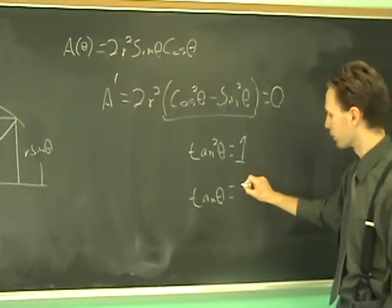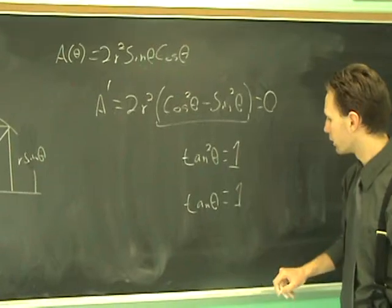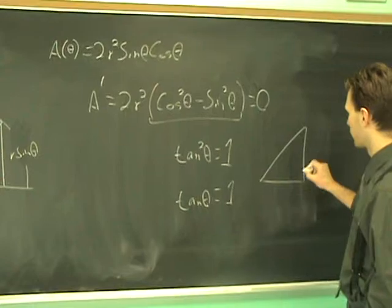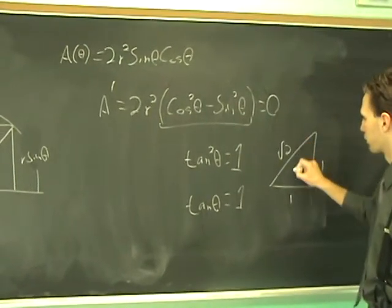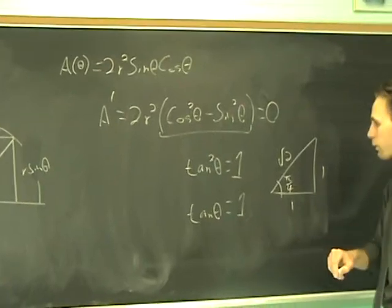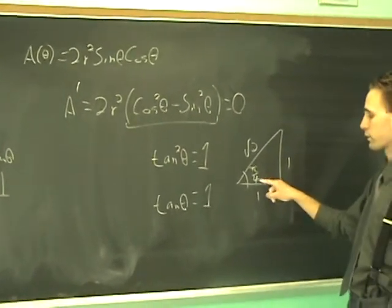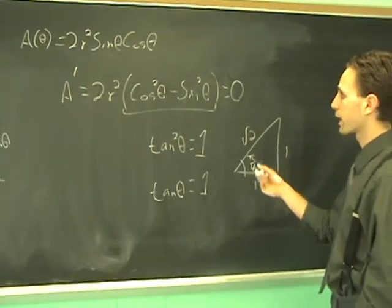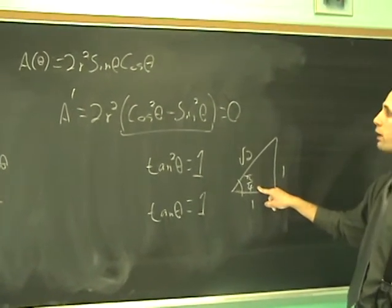It's not going to be minus 1, so it's just going to be plus 1. And you know how to solve this, right? The tangent of what angle equals 1? Well, it's 1, 1, radical 2, and the 45, 45, 90 triangle, pi over 4. That's going to be the answer. That's where the critical number happens. So, it appears that the maximum value occurs when theta is pi over 4.